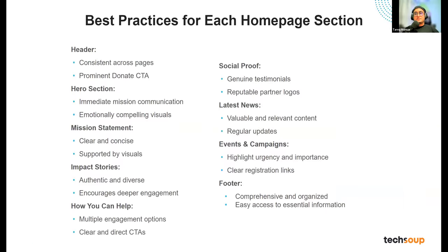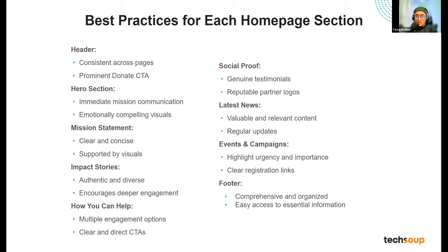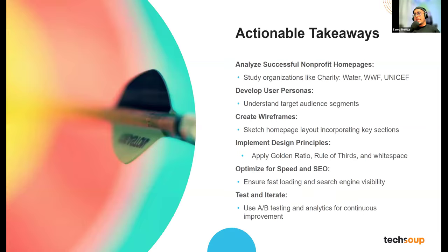Best practices for each homepage section: the header includes your logo and navigation with a prominent call to action. Then the hero section. Then the mission statement. Then impact stories. Then social proof. Then latest news, events, and campaigns. Then the footer. I have a high-converting homepage checklist with structure and extensive resources for free — that's the bonus I'm giving away. So let's go to actionable takeaways.